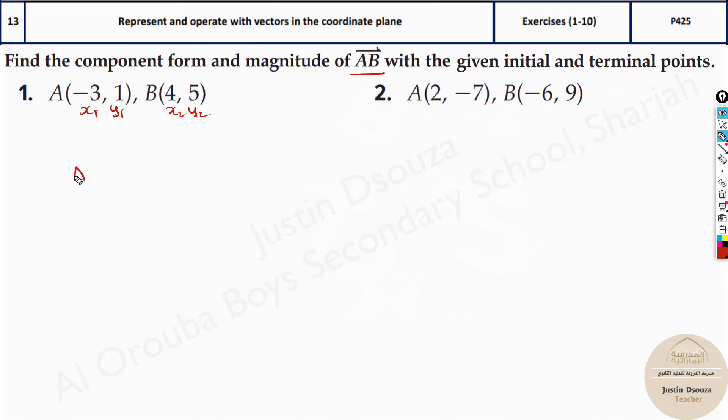The component form for the vector is very simple. We write AB with a line over here. This is given as these diamond brackets: x2 minus x1 comma y2 minus y1. So you get two digits over here then.